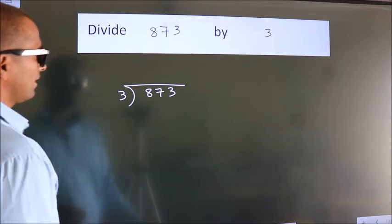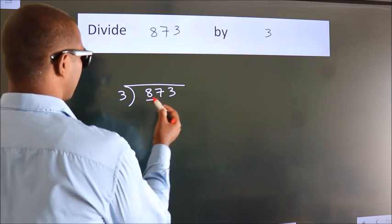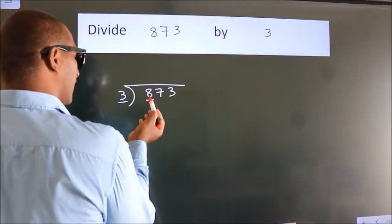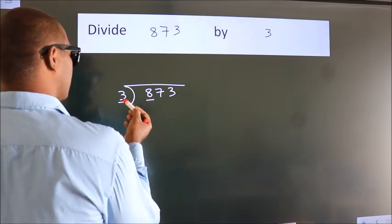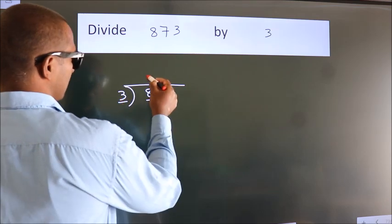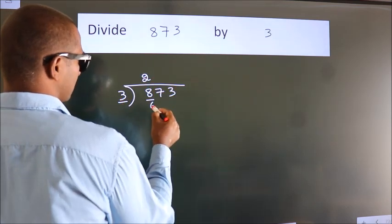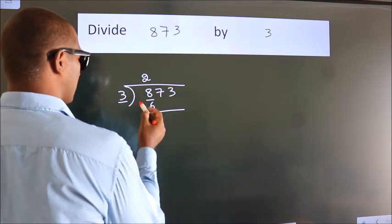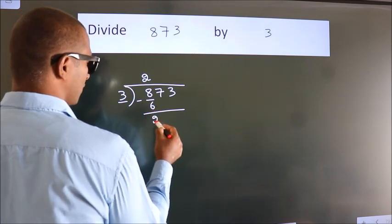Next. Here we have 8, here 3. A number close to 8 in 3 table is 3 times 2 is 6. Now we should subtract. We get 2.